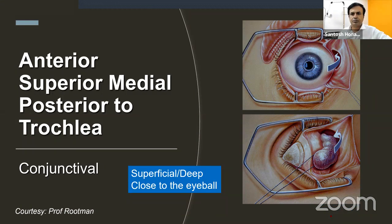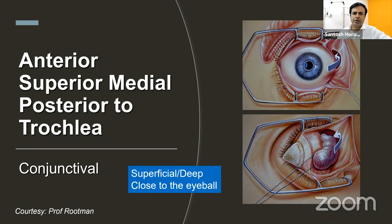Any conjunctival incision in the supranasal, superior, or lateral aspect is mainly for lesions very close to the eyeball. Conjunctival incisions near the orbital margin are generally for extraconal or extra-periosteal lesions, except in the inferior, infralateral, and medial aspects. The transconjunctival supranasal approach is also available for such lesions.